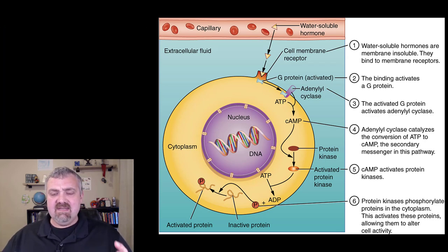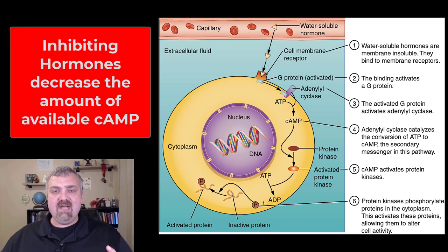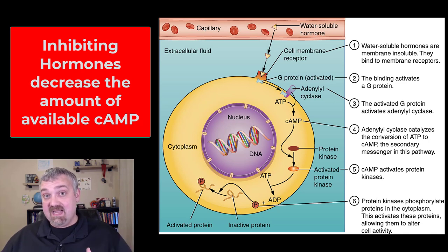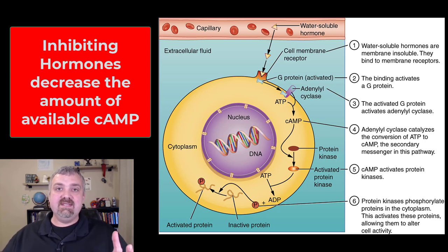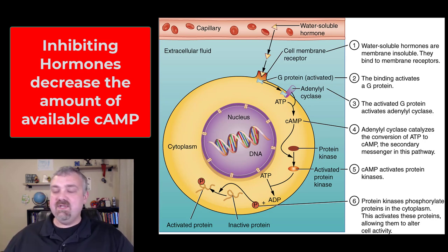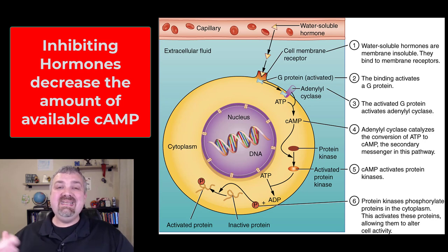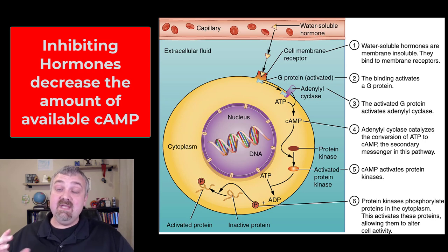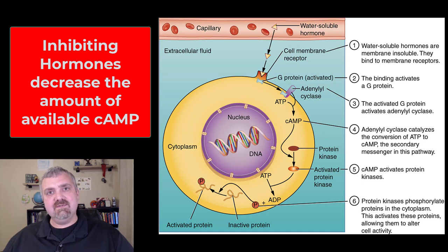One last thing — this second messenger system utilizing cyclic AMP: there are actually hormones that are going to decrease the amount of cyclic AMP. These would be your inhibiting hormones. Most hormones are going to up-regulate what a cell is doing, but there are hormones that actually down-regulate and tell cells to do less. They do so by decreasing cyclic AMP — their G protein would decrease the level of cyclic AMP instead of increasing it. So that is how your lipid soluble and water soluble hormones actually reach their targets and impact their cells.